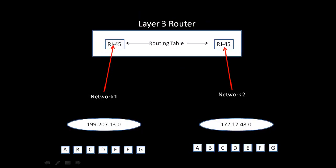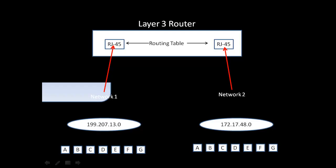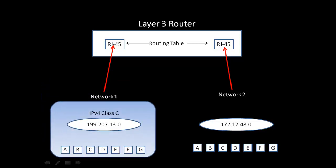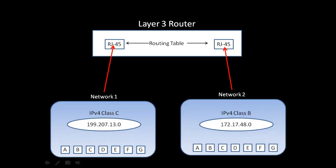A layer 3 router has a routing table and learns adjacencies, subnets, and other networks in the same way that a layer 2 switch learns MAC addresses. In this case, the first network is an IP version 4 class C, and the second network is an IP version 4 class B, 172.17.48. Through its routing table, the router can route traffic from the class C network to the class B network and vice versa.